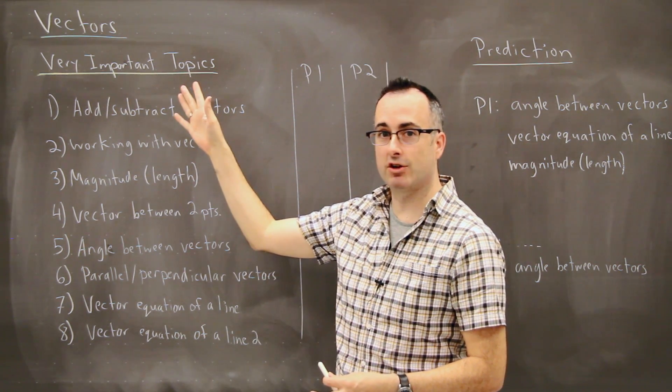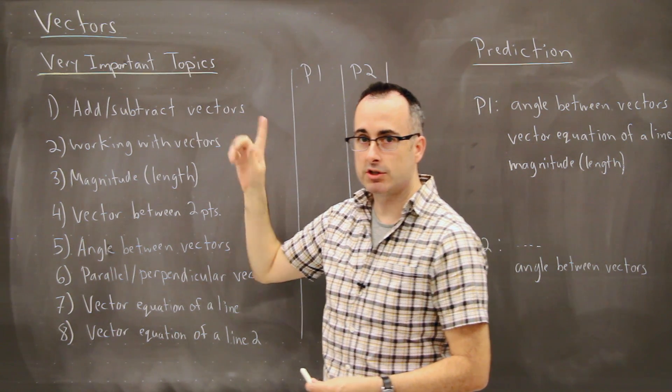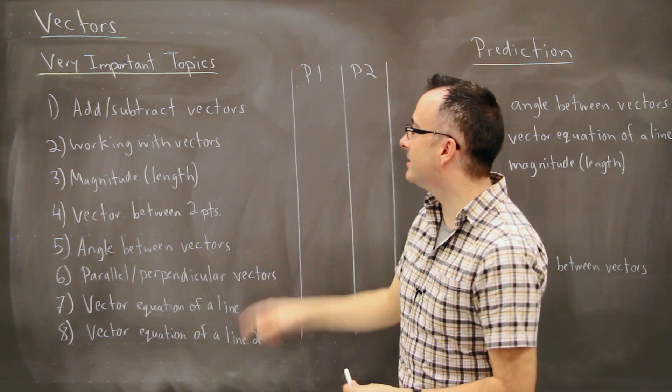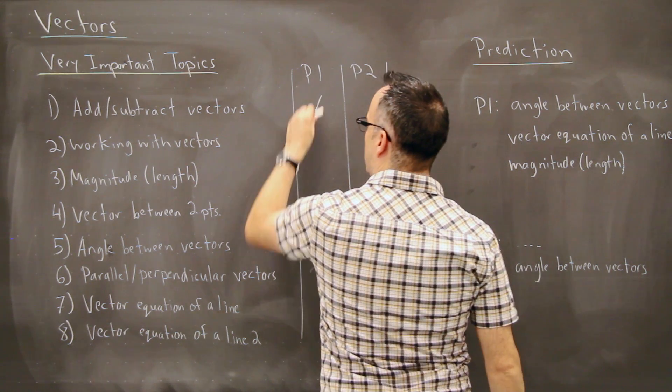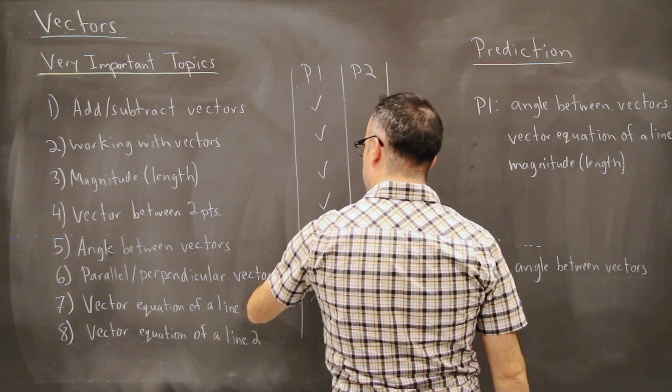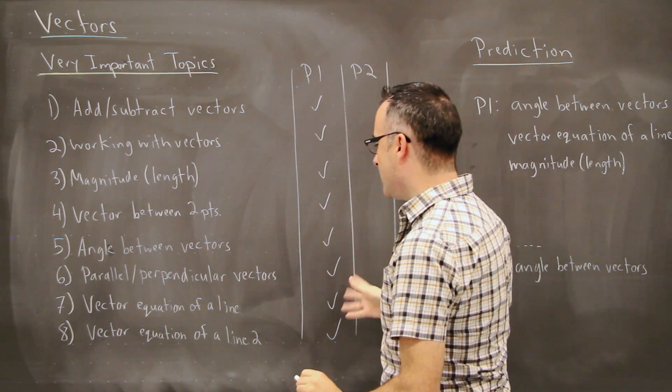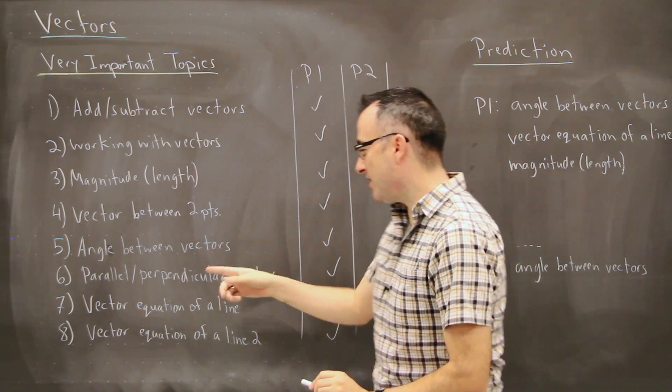Very rarely does a vector question show up on paper two. So that's why for these very important topics, it's gonna be really easy. I can just say hey look at that, they all show up pretty much on paper one. So that's really easy.